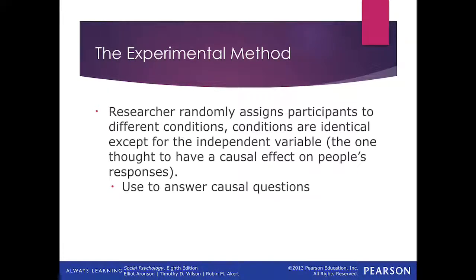In the milk example, if we want to know the cause-and-effect relationship, we move to an experimental method. We put children in different groups: this group drinks no milk (our control), one glass a day, two glasses, three glasses, and so on — randomly assigning children to each group. Then we can actually answer a causal question: the amount of milk changed is actually influencing weight, and we can say that milk consumption is affecting weight.